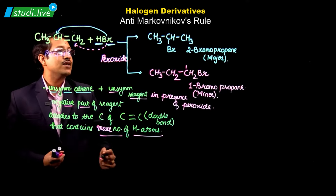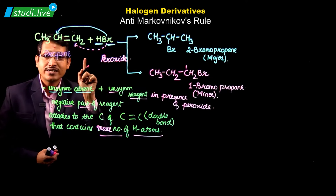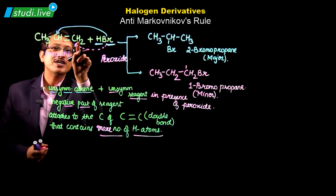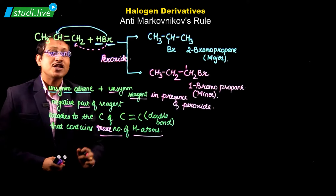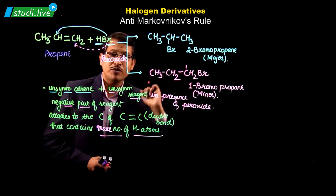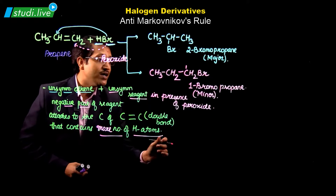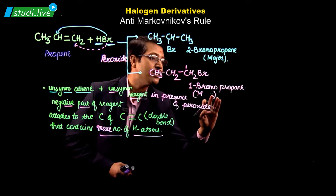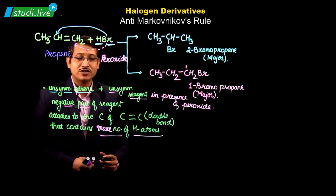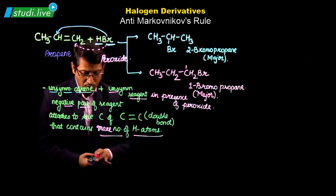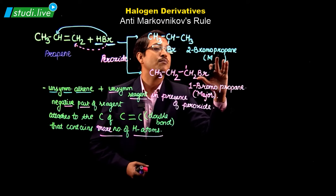Coming back to the structure: Br should attach to the carbon with more number of hydrogen atoms. Here, CH2 has more hydrogens than CH, so Br attaches to CH2, giving us CH2-Br — which is 1-bromopropane. This is now the major product, and 2-bromopropane becomes the minor product. That is the change.